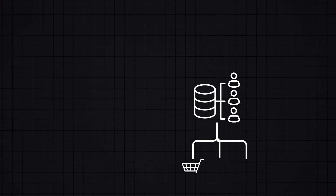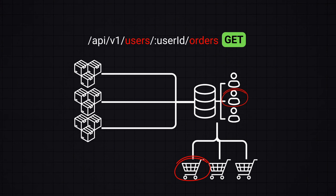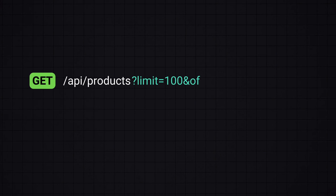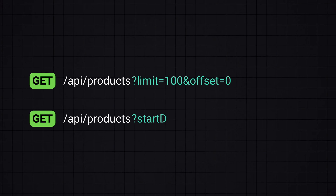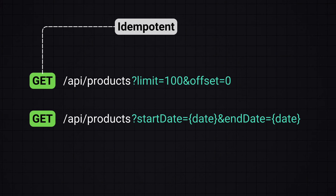In an e-commerce setting, you might have relationships like user-to-orders or orders-to-products, and you need to design endpoints to reflect these relationships. For example, to fetch the orders for a specific user, you query GET /users/{userId}/orders. Common query parameters also include limit and offset for pagination, or start and end date for filtering products within a certain date range, allowing clients to retrieve specific sets of data without overwhelming the system.